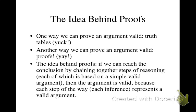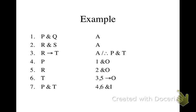Let's look at an example. So suppose we have the argument P and Q is the first premise, R and S is the second premise, and then R arrow T is the third premise. And our conclusion is P and T. Okay.